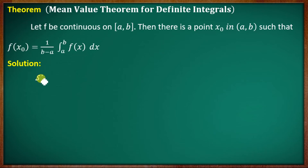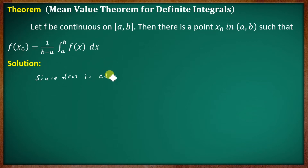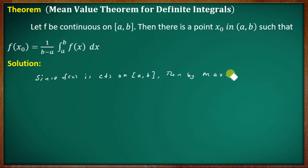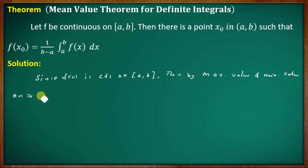Proof: Since f is continuous on the closed interval [a, b], by the maximum value and minimum value theorem, f attains its maximum and minimum values on this interval.